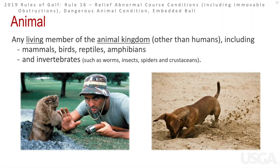The definition of an animal is any living member of the animal kingdom other than humans. So it includes mammals, birds, reptiles, and also worms, insects, spiders, and things like that.